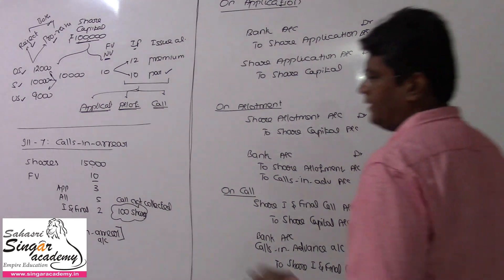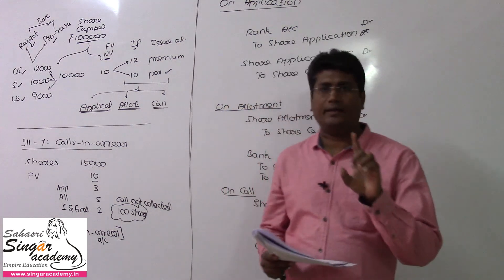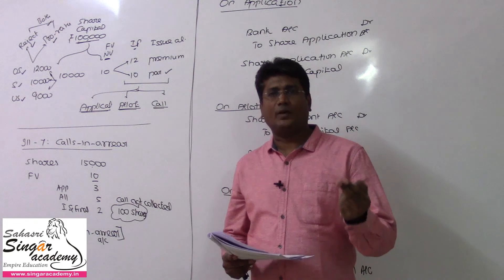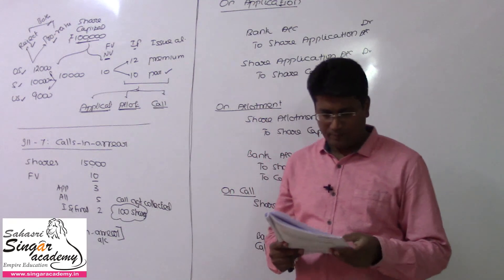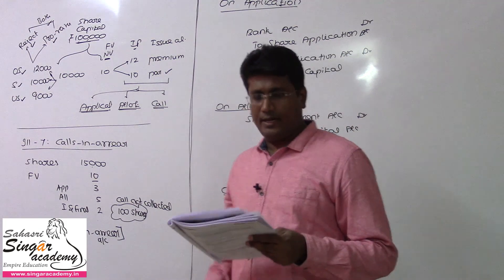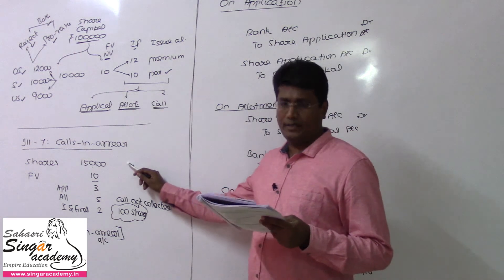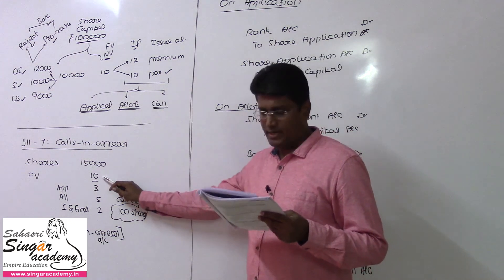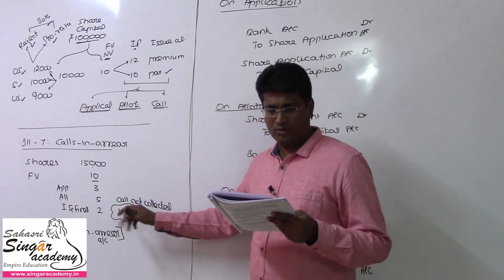Illustration 7: Calls in Arrear related, Calls in Advance partner, Calls in Arrear case. J.M. Tyres issued 15,000 ordinary shares of rupees 10 each, payable as follows.